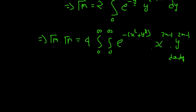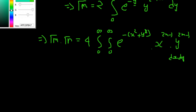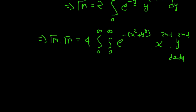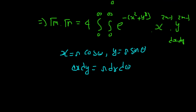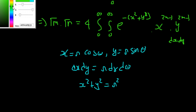The next step is to convert this into polar form. We put x equals r cos theta, y equals r sin theta, dx dy equals r dr d theta, and x squared plus y squared equals r squared.